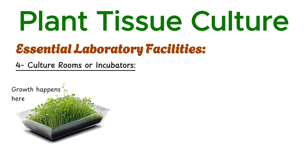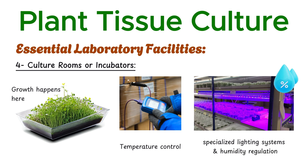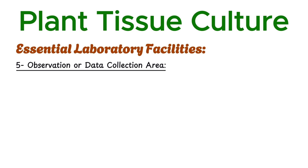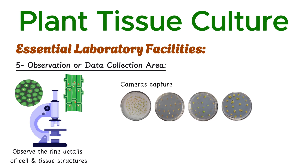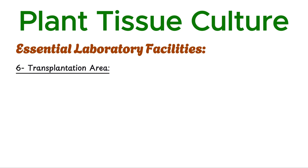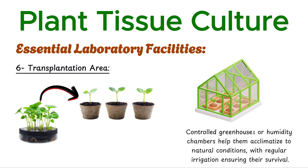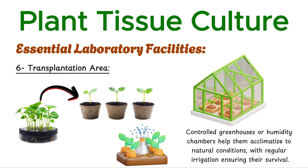Growth happens here. These rooms are equipped with temperature controls, specialized lighting systems, and humidity regulation to create the perfect environment for plant tissues. Shelves and racks keep everything organized as the cultures develop. Microscopes allow scientists to observe the fine details of cell and tissue structures, while cameras capture each stage of development. Computers and journals keep records for analysis and documentation. This is where cultured plants transition to the outside world: plantlets are carefully transferred to pots or trays filled with soil mixtures, and controlled greenhouses or humidity chambers help them acclimatize to natural conditions, with regular irrigation ensuring their survival.